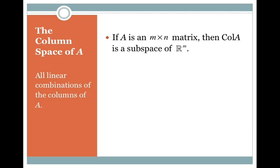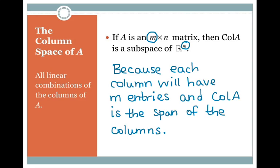If A is an M by N matrix, then the column space of A is going to be a subspace of Rᵐ. It's based on how many rows are in your matrix, because each column will have M entries, and the column space of A is the span of the columns — so you want to look at how many entries are in each column, which is the number of rows in your matrix.